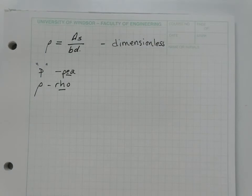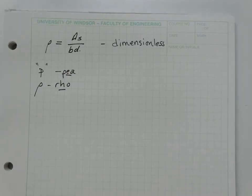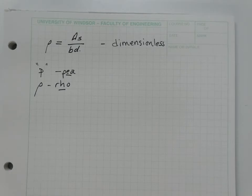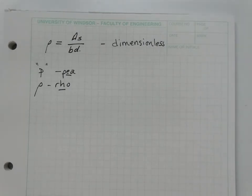Because rho is dimensionless, it doesn't matter whether you measure area in square inches or square miles — you get the same ratio. This is a very powerful analysis tool. We're going to derive a couple of expressions today that will help in analysis, but are really helpful in design.